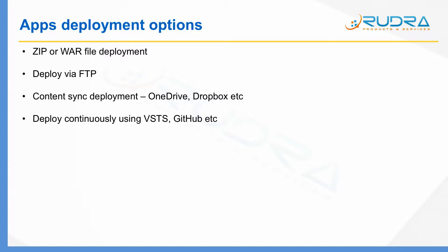The next option is content sync deployment using OneDrive or Dropbox. You create a folder within OneDrive or Dropbox and any content in that folder gets synchronized into your Azure App Service. This is mainly used for static websites where you want changes reflected automatically. Note that OneDrive for Business is not yet supported — only regular OneDrive can be used for content sync deployment.